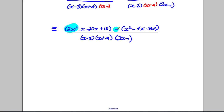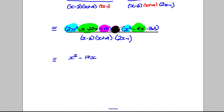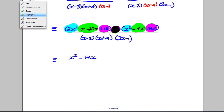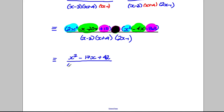Now combining the numerators — the subtraction means subtract everything in the second bracket. I have 2x² minus x² giving x². For the x terms: −21x subtracting −4x gives −21x + 4x = −17x. For the constants: 10 subtracting −32 is 10 + 32 = 42. So the numerator is x² − 17x + 42, all divided by (x − 3)(x + 4)(2x − 1).